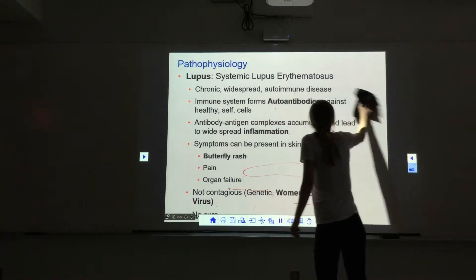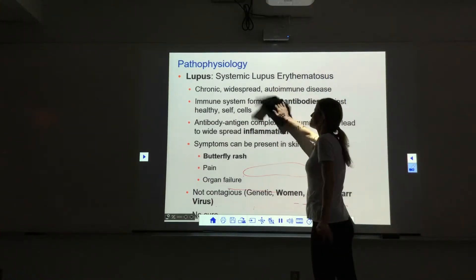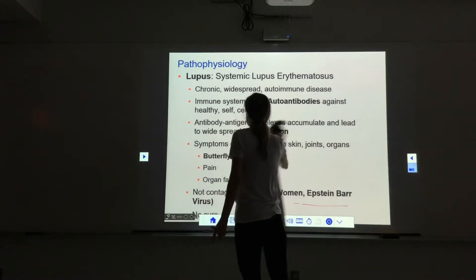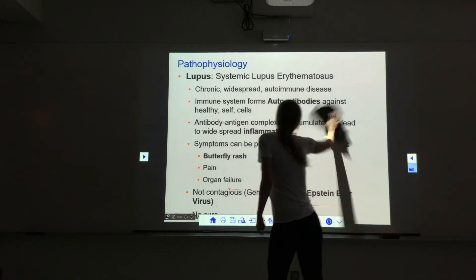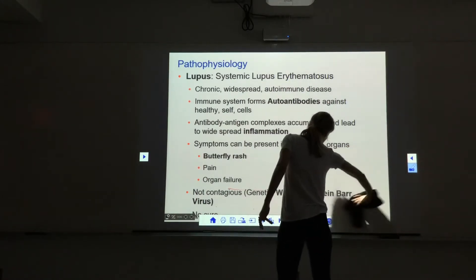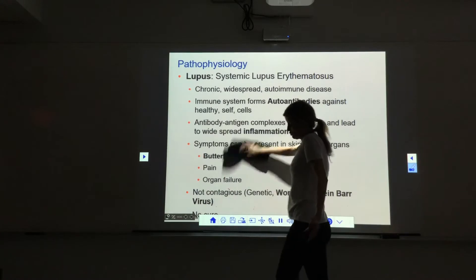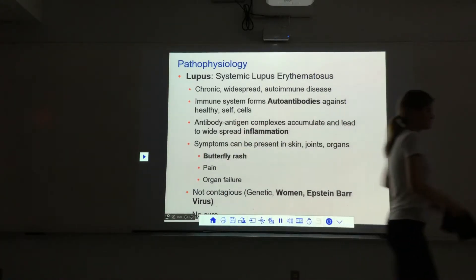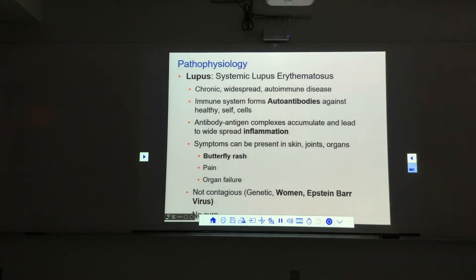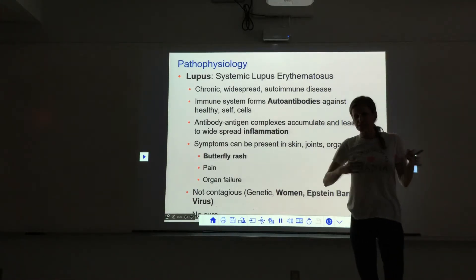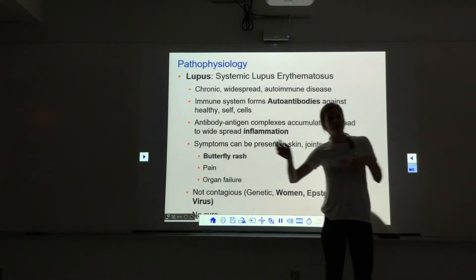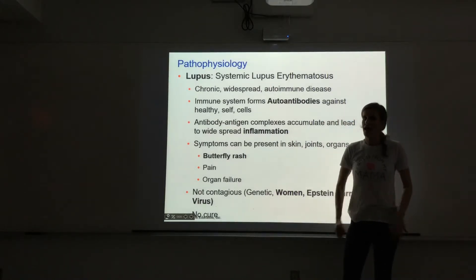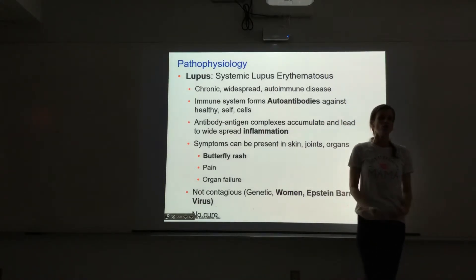The other thing we'll talk about is lupus. There are actually multiple types of lupus, but when we say lupus, we're typically referring to SLE — systemic lupus erythematosus — the most common type. This is chronic and really widespread. Lupus kind of waxes and wanes; it'll get worse and then ease up a little bit, and it can cause problems all over the body.